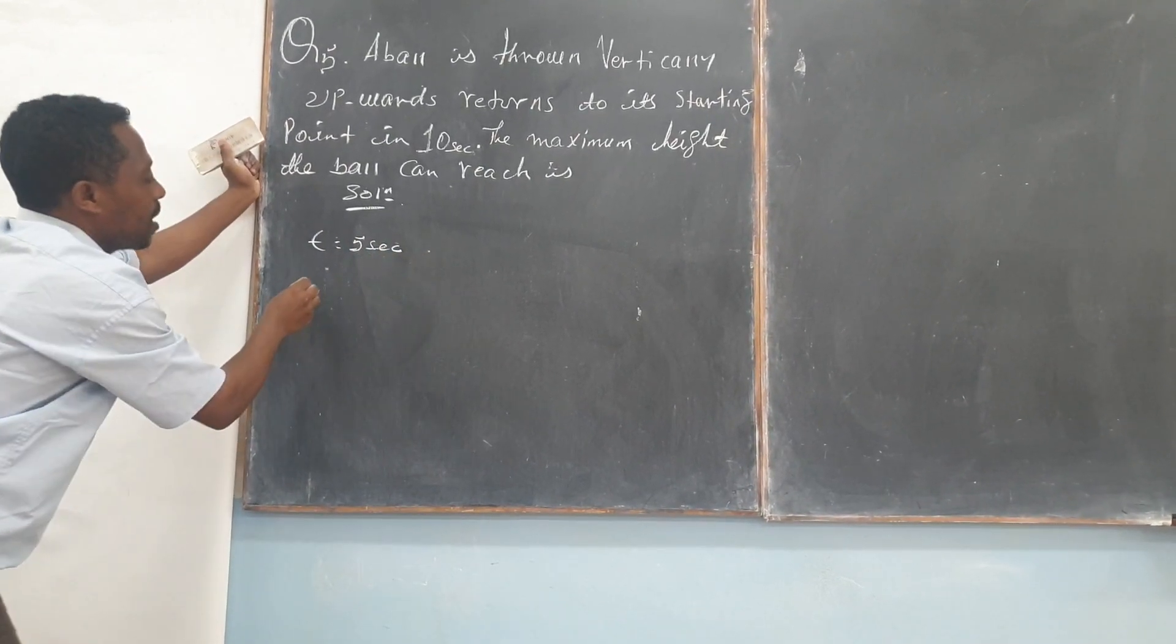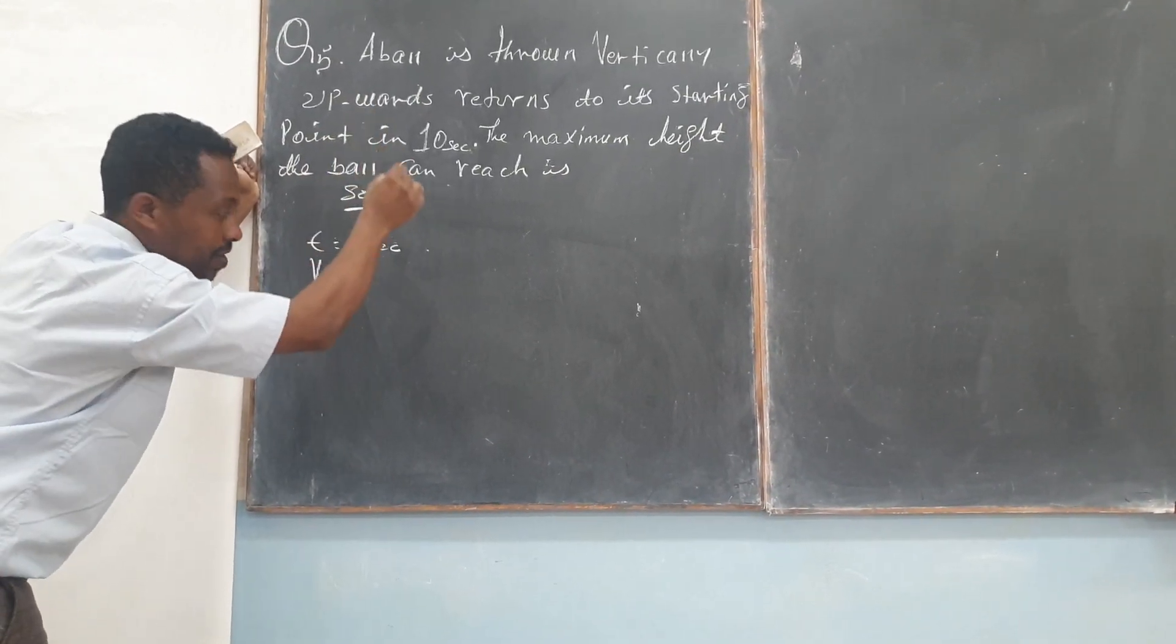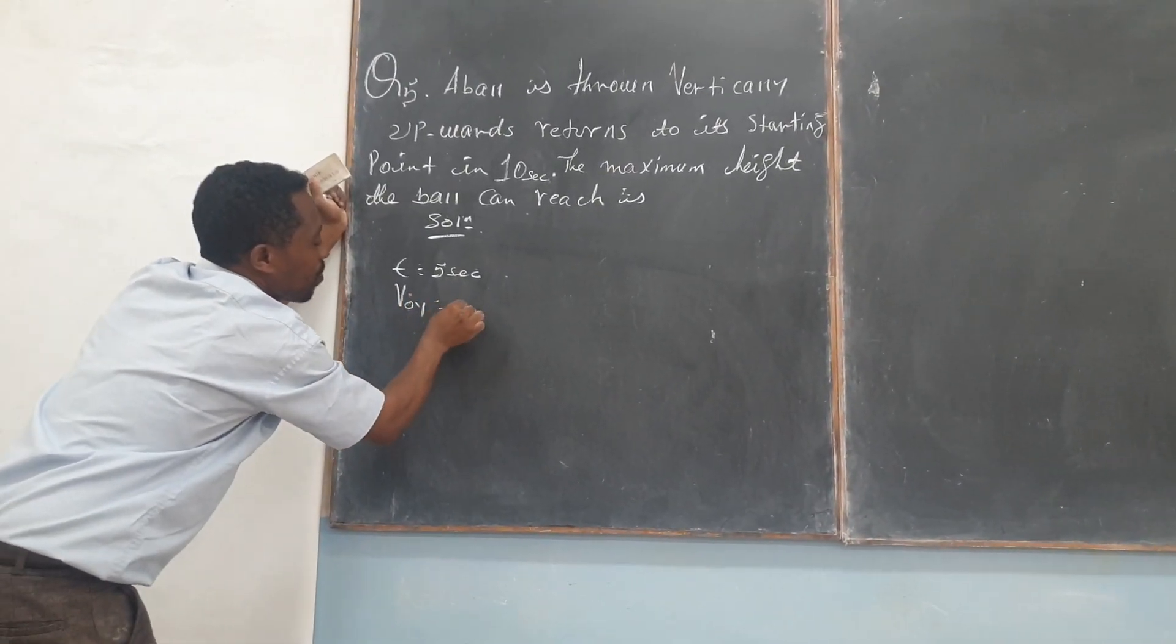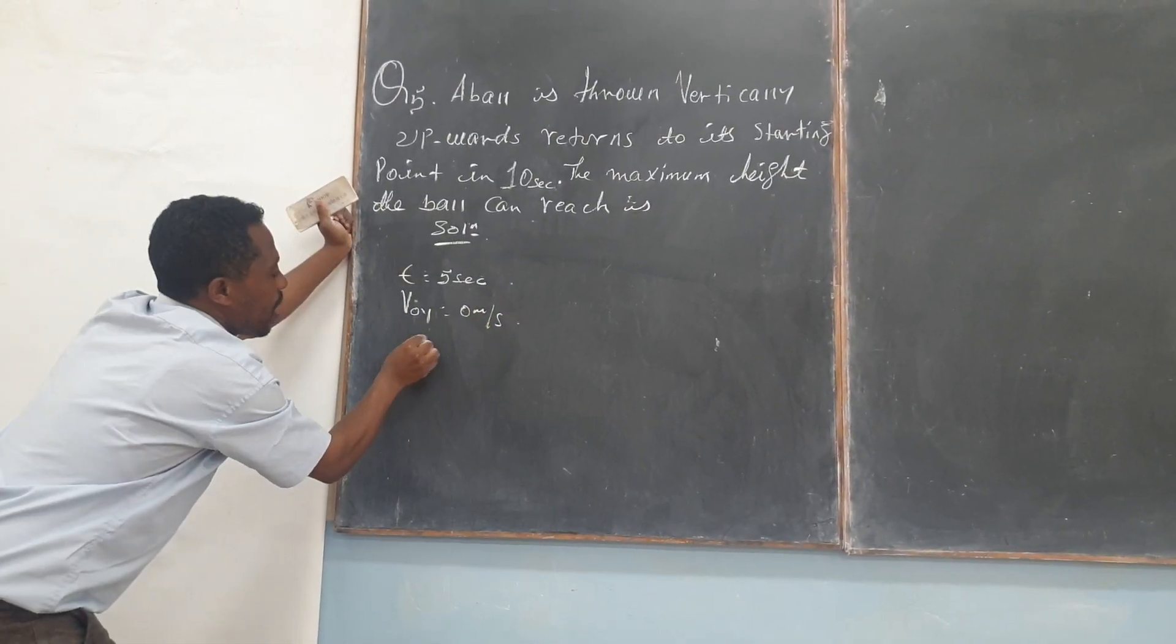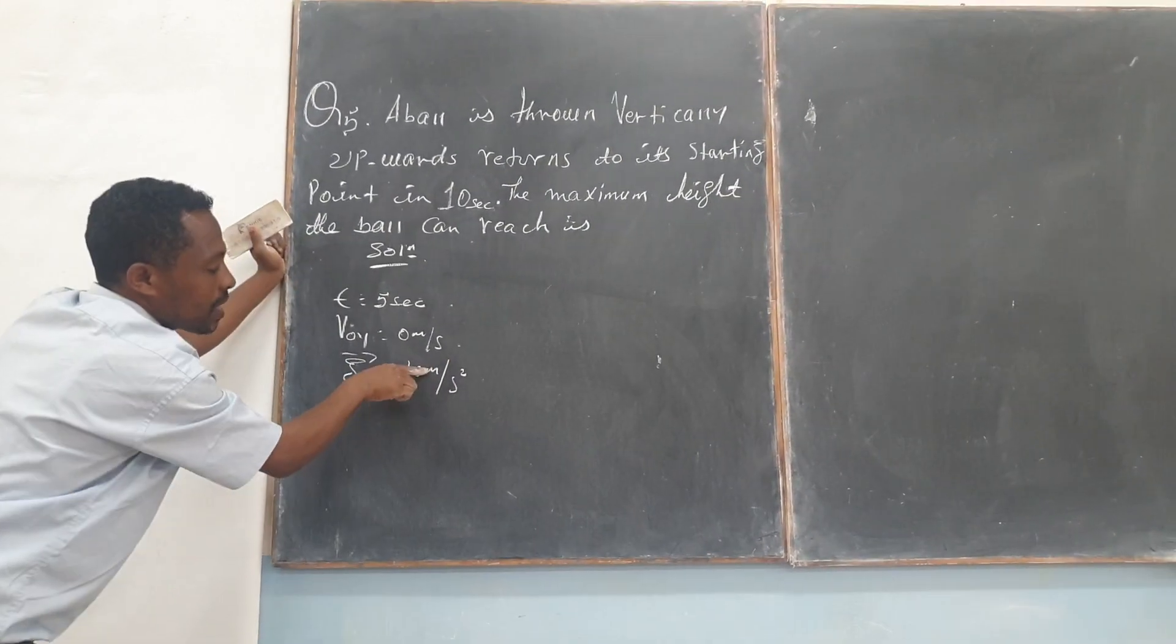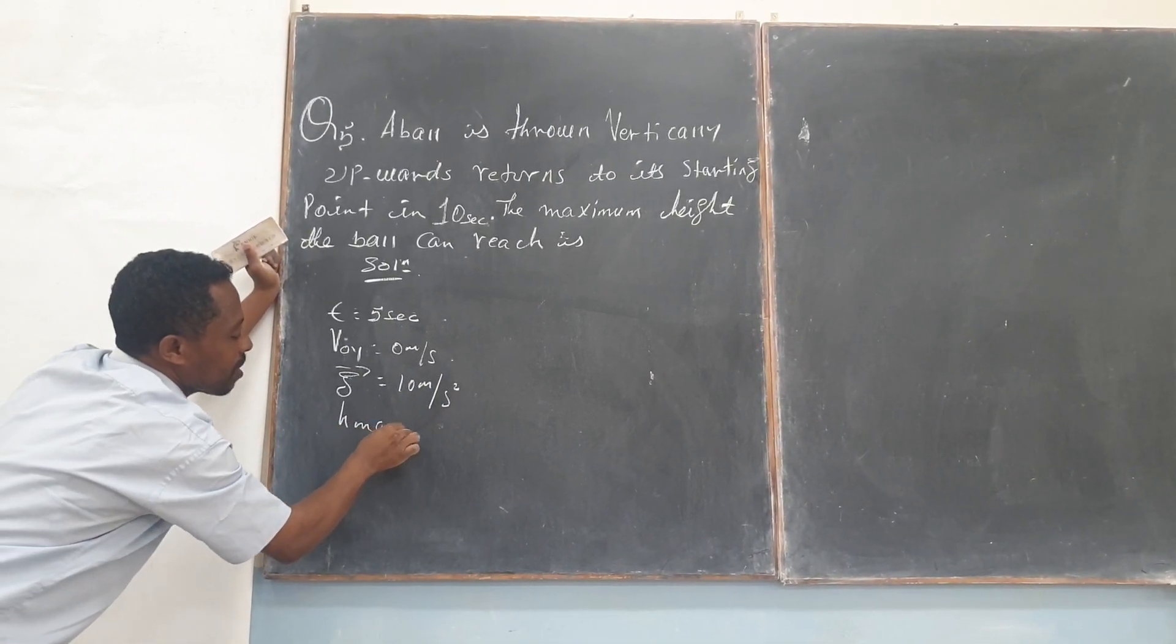And then H maximum, the V final for the upward motion and then the V initial for the downward motion which is 0 meters per second. And then we have acceleration due to gravity, that is 10 meters per second squared. We're requested to find maximum height. Great.